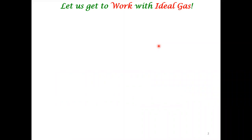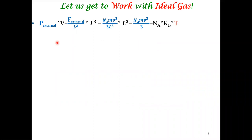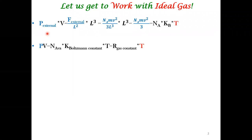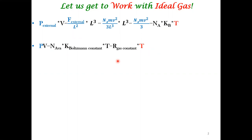In the previous lecture on ideal gas and work, we connected the pressure computed from microscopic arguments. We started with gases moving in a particular way, considered the momentum change as gas interacts with the wall, and connected that to the internal and external pressure. There was also an empirical relationship connecting measured pressure with measured temperature. We substituted the derived pressure into this expression and derived an important relationship called the equipartition theorem.